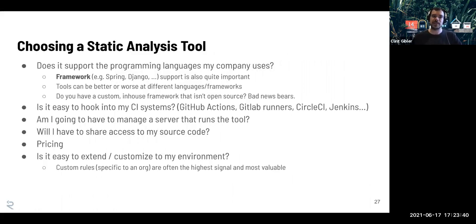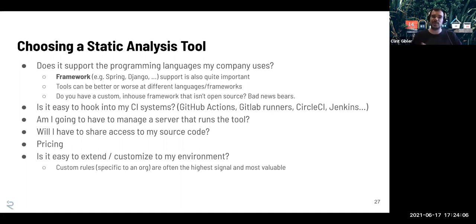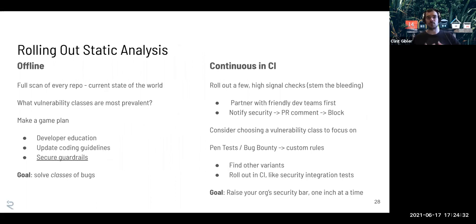Some general best practices: if you're choosing a static analysis tool, regardless of what you choose, ask these questions: Does it support the programming languages and frameworks my company uses? Tools can be better or worse at different languages and frameworks. If you have a custom in-house framework that's not open source, you'll likely get mediocre results unless you're willing to invest in tuning it. Is it easy to hook into your CI? Whether that's GitHub Actions or others. Are you going to have to manage a server? Will it get access to my source code? How expensive is it? And is it easy to extend and customize — since custom rules can be very high ROI.